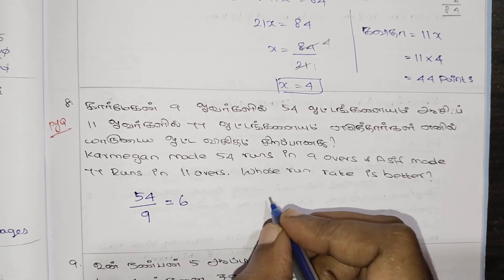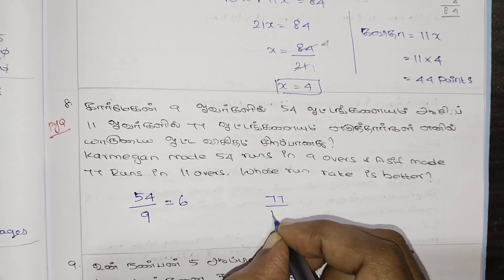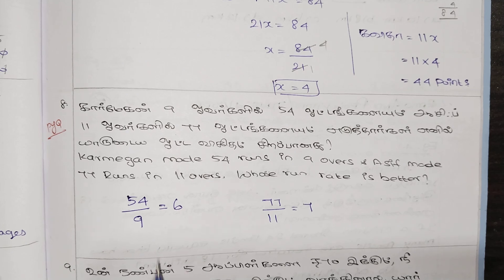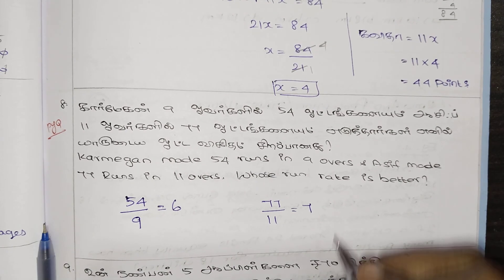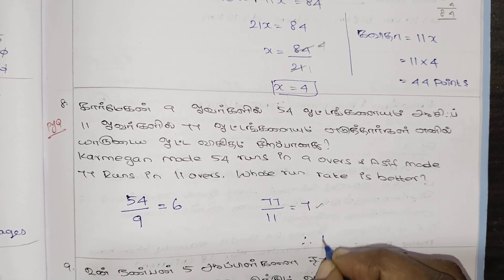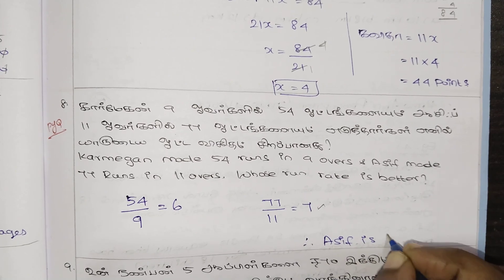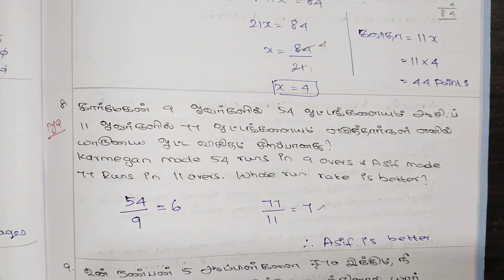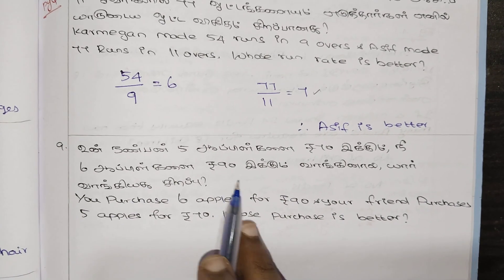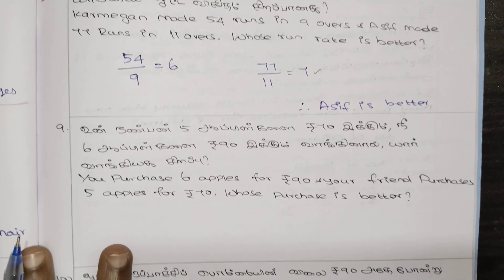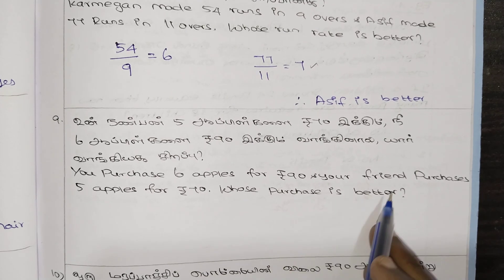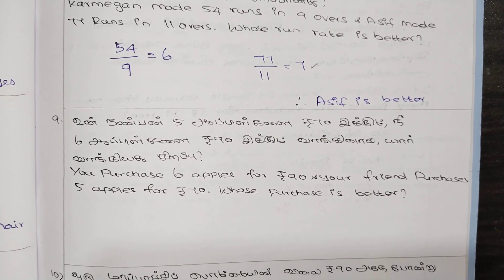Now the next question: you purchased 6 apples for 90 rupees. Your friend purchased 5 apples for 70 rupees. Whose purchase is better? We divide to compare: 90 divided by 6, and 70 divided by 5. We need to find the unit price for each.